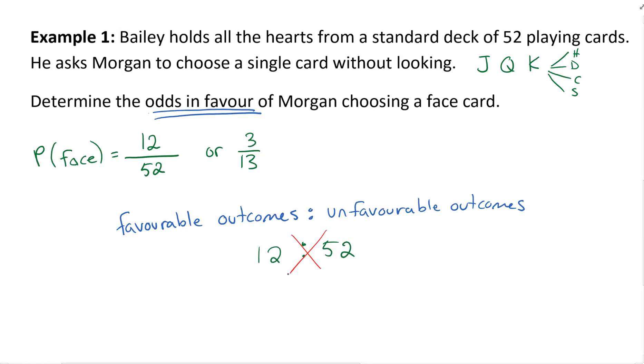Why is that wrong? I agree that 12 is our favorable outcomes, but 52 is our total number of outcomes, not our unfavorable outcomes. So how do we get that? Well, what's left over? That would be 52 minus our favorable outcomes, which would be 12 to 40.